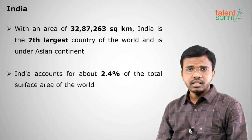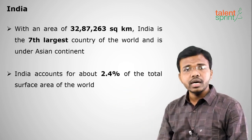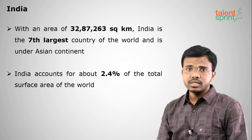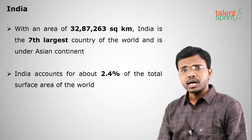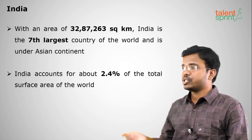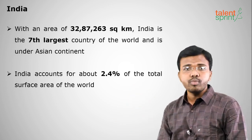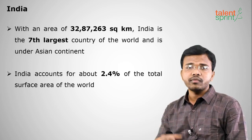India is the seventh largest country in the world. Russia is the first largest country in terms of area. India has an area of 32,87,263 square kilometers. It is the seventh largest in terms of area, is part of the Asian continent, and this area constitutes around 2.4% of the total world's land area.